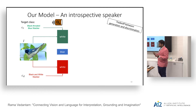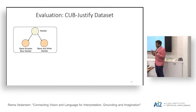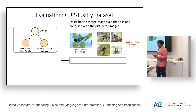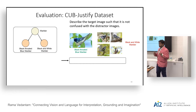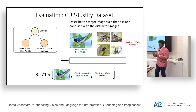Our evaluation is based on a dataset we collected called CUB-Justify. Based on the common names of birds, we induce a hierarchy and pick two different birds at the same level. Given target and distractor class pairs, we sample one image from the target class and a set from the distractor class, and ask a user to describe the target image so the sentence is not confusing with respect to the distractor. We sampled 3,171 such image target-distractor pairs and collected five descriptions each. This is only for evaluation — not used for training.